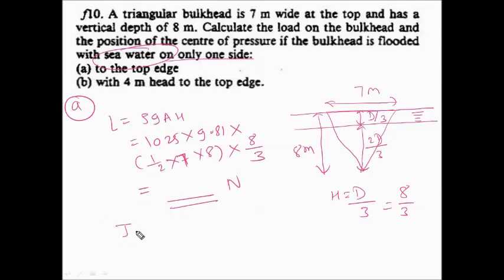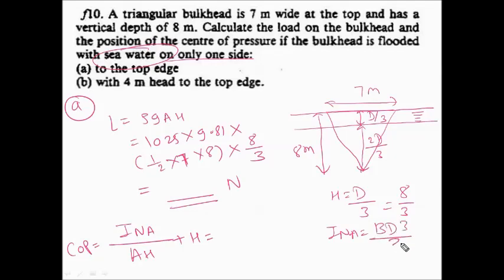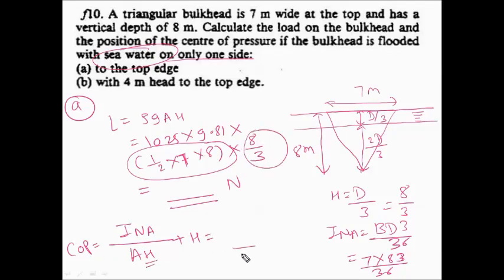For the center of pressure in Condition A, the formula is INA / (A × h̄) + h̄. For a triangle, INA = BD³/36 = 7 × 8³ / 36. Area = ½ × 7 × 8, and h̄ = 8/3 meters. Substituting all values gives the center of pressure from the free surface.